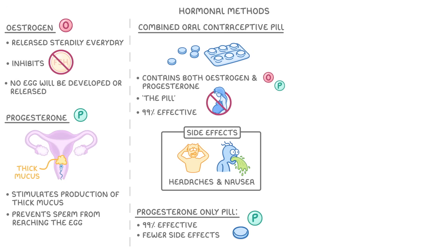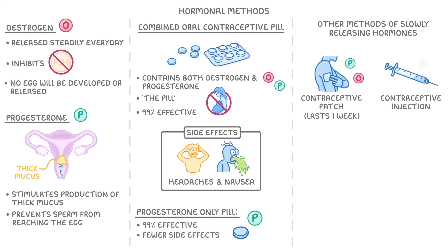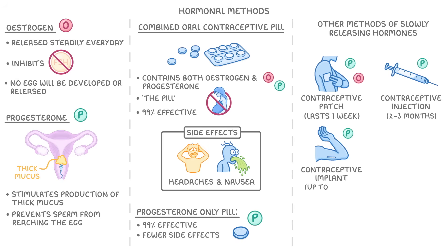As well as taking a pill, there are also a few other methods of slowly releasing hormones. The contraceptive patch is like a small sticker that you place on the upper arm, which slowly releases oestrogen and progesterone, and each patch lasts one week. The contraceptive injection is an injection of progesterone into the upper arm, with each dose lasting two to three months. A longer option is the contraceptive implant, which involves a small device being placed under the skin of the arm, which will then slowly release progesterone for up to three years.